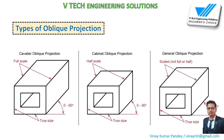Now, types of Oblique Projections. First, I have talked about the front, which is true length. If I talk about the front view, then this is true length — if it is 10 by 10 cm, then we will draw it as 10 by 10 cm.